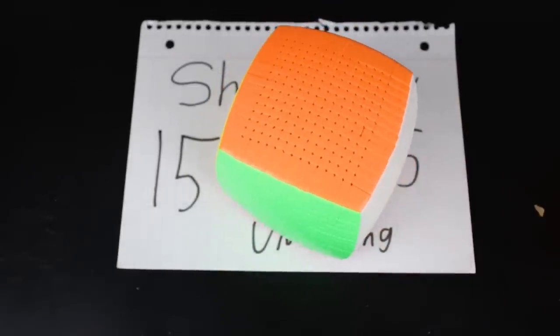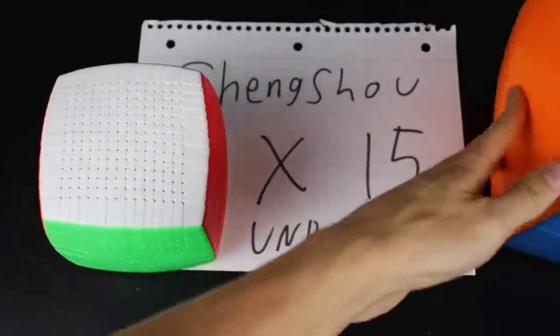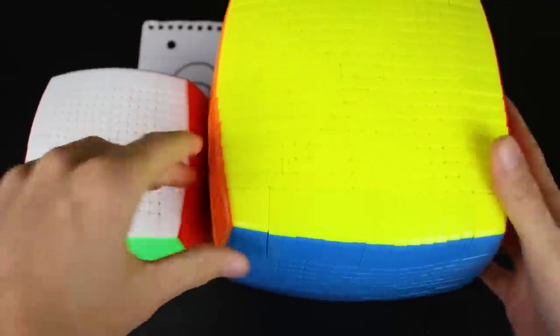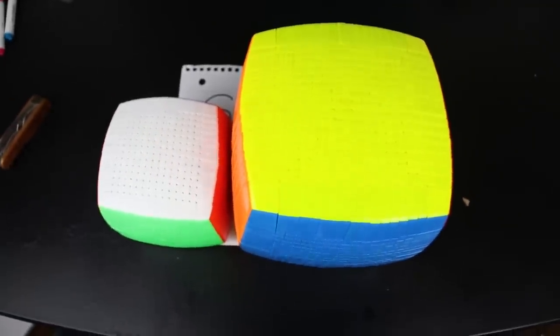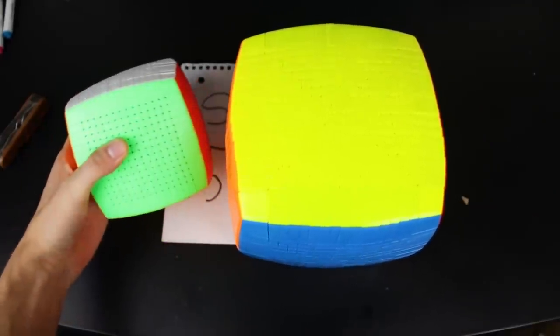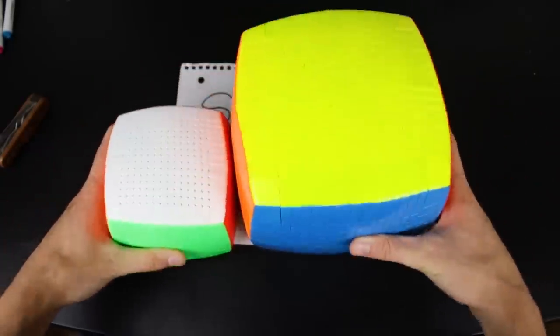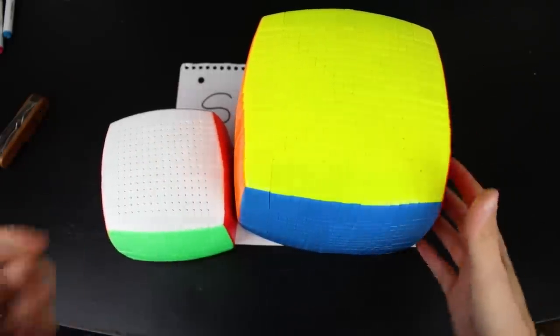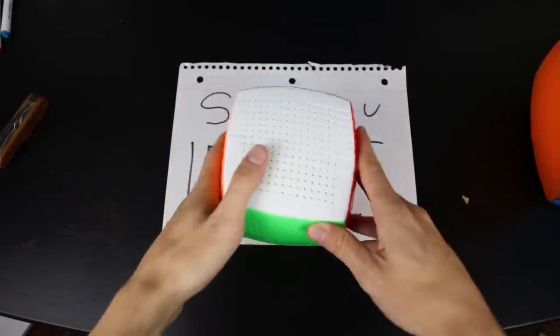Now before we get into first turns, I just want to emphasize that this is not very large because here is the 17x17. And this is large. The 17x17 is pretty ridiculous. This is just a 15x15. And you can see it's significantly smaller. So definitely a lot more friendly to solve, better to hold in your hands.